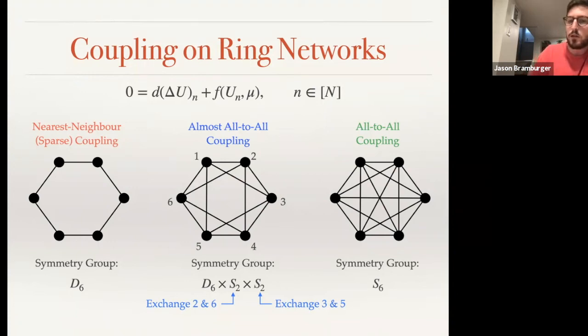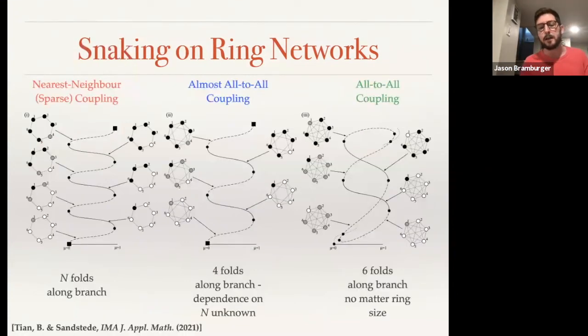So what we decided to do was take a similar approach to what we did with the 2D lattice, where we drop out the coupling, find what the patterns look like, and then perturb the coupling in to see how these patterns arrange themselves in parameter space. And what we found is that for the nearest neighbor or the sparse coupling, you get your usual snaking. So the idea here is that if you start with a ring with only a single site activated, then as you ascend this snaking bifurcation diagram, you slowly start activating around the ring, starting with the two nodes that are closest to your initial activation.